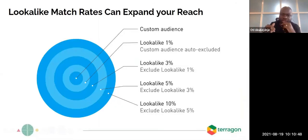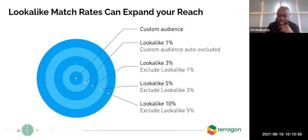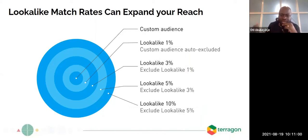You can create lookalike audiences at different levels: one percent accuracy, three percent, five percent, ten percent. It keeps broadening the audience as you decrease the level of accuracy — one percent being the most accurate, ten percent being the broadest.